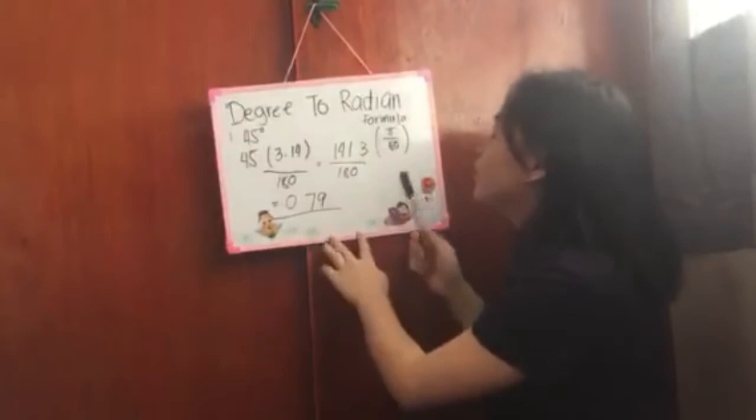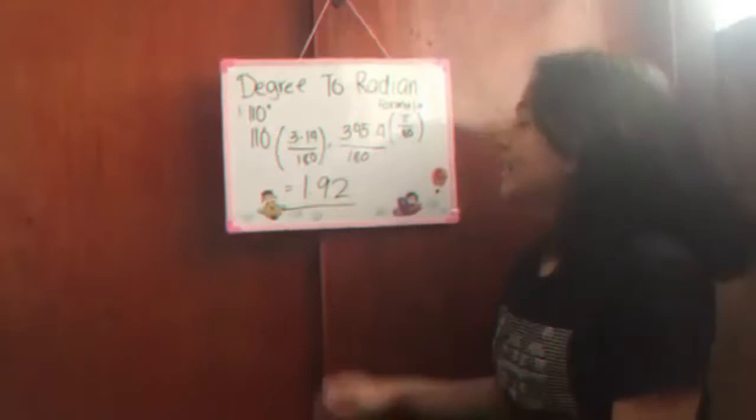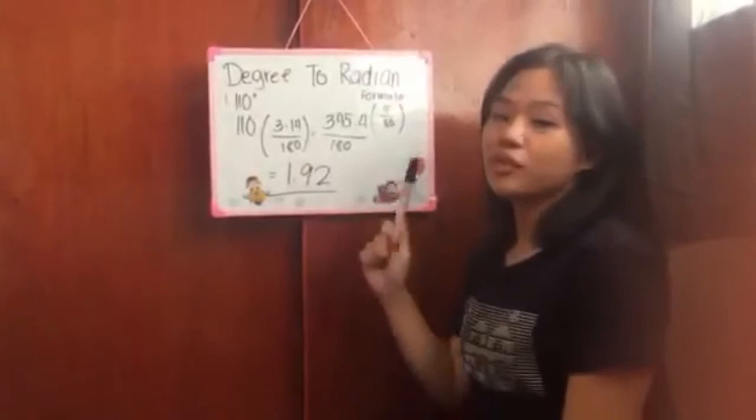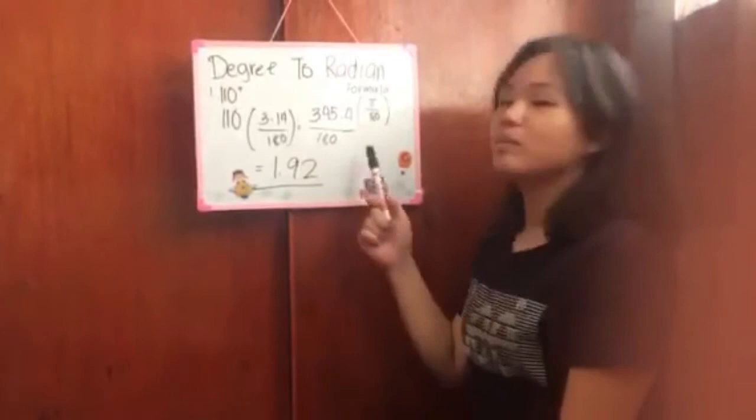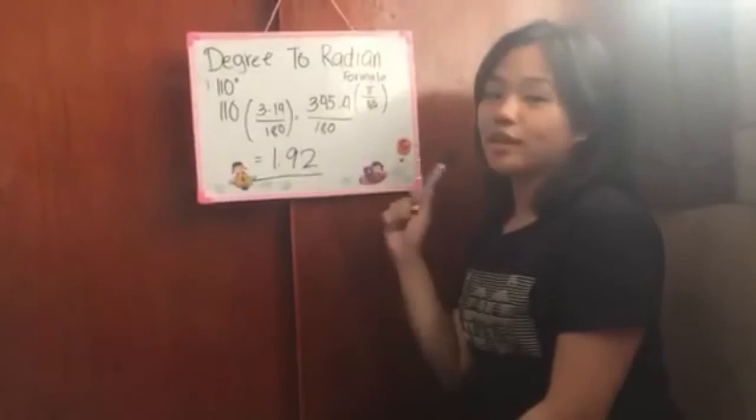The example is 110 degrees. 110 times 3.14 equals 345.4. And divide by 180 since it has no denominator. 345.4 divided by 180 equals 1.92.